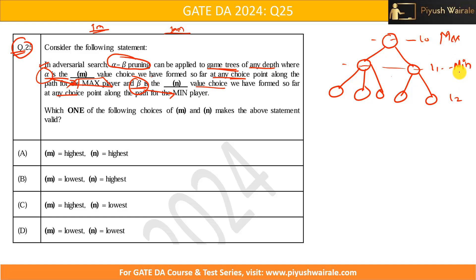The min player will always try to minimize the chances of the max player, while the max player will always try to maximize its own chances. This is how adversarial search works — the max player maximizes its outcome and the min player tries to reduce the max player's chances.